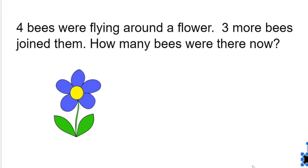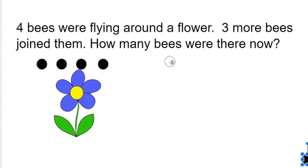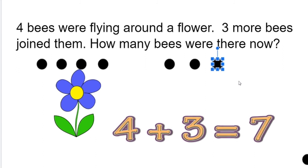Let's look at the bee problem the same way — we're not going to draw bees, we're just going to use dots. It said four bees were flying around the flower, three more bees joined them, how many bees were there now? So we had four bees to start: one, two, three, four. Then three more bees joined them: one, two, three. How many bees are there now? Count the dots: one, two, three, four, five, six, seven bees all together.